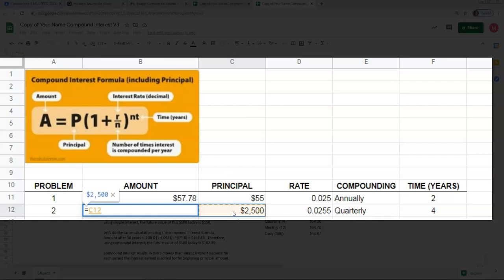Click on the principal. Multiply that times 1 plus R divided by N. Our rate here, 0.0255 or 2.55% divided by N, which in this case, because it's quarterly, that would be four times per year. Raise that to a power of four times the number of years.